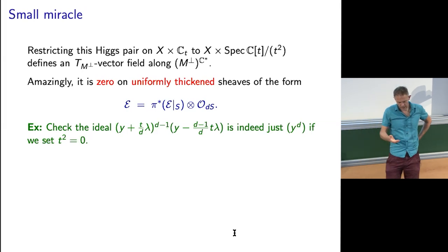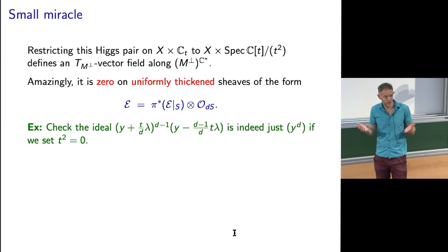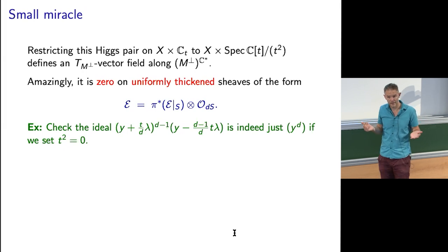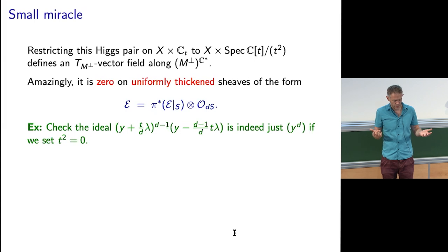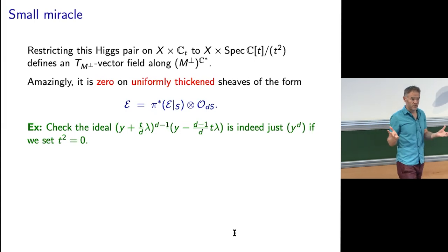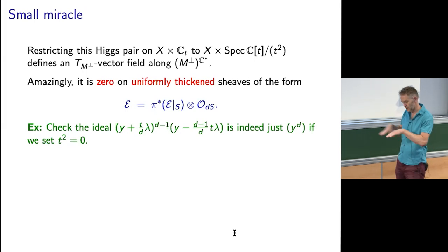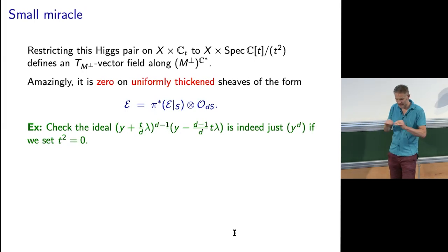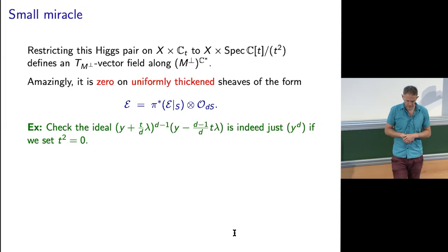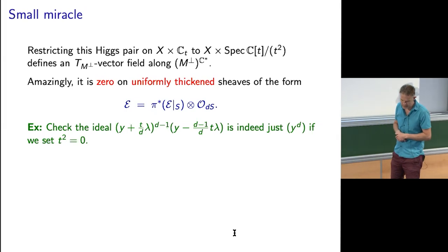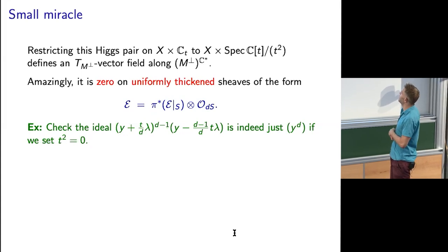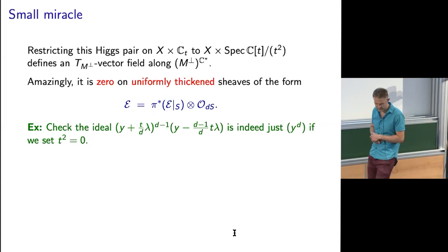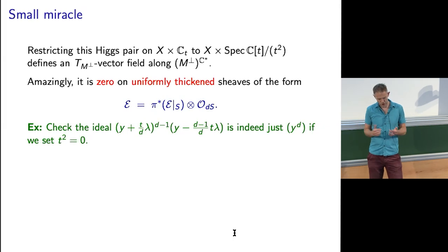At first sight, that vector field doesn't look like it's going to vanish anywhere on my component — which would be bad because it would mean all invariants vanish and we'd have computed all Vafa-Witten invariants except those on the zero locus, the instanton branch. But amazingly, it does vanish — this vector field — and this is the miracle. I never fail to enjoy this miracle.